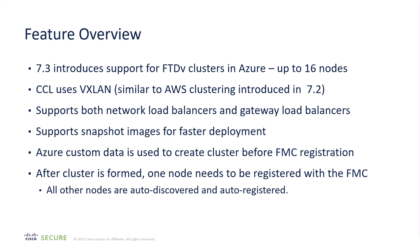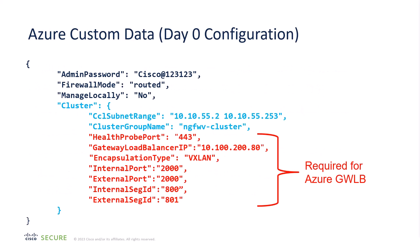You cannot configure the cluster after you've deployed the firewalls. After the cluster is formed, you register one node to the FMC, and all the other nodes are auto-discovered and auto-registered. Here's an example of the custom data — it's very simple to create a cluster, though a little more complicated if you want that cluster to integrate with the gateway load balancer.